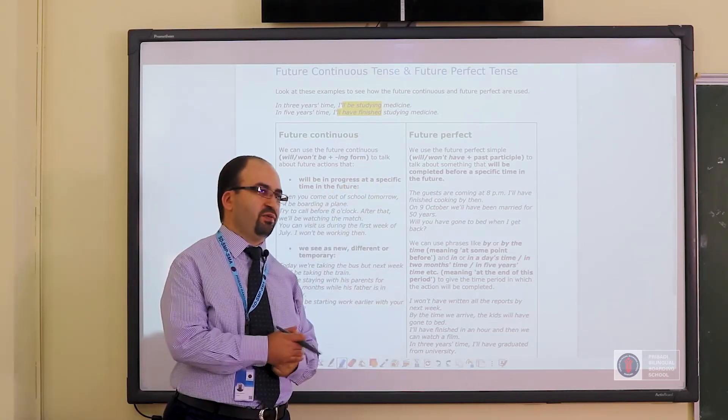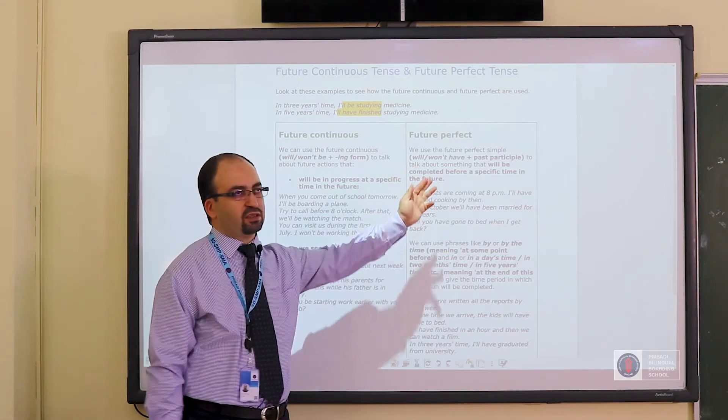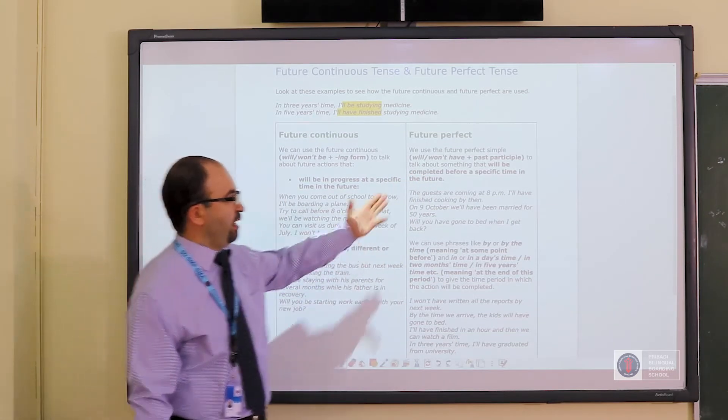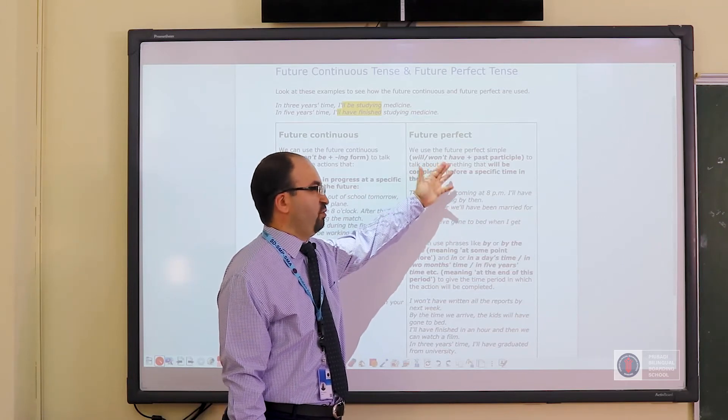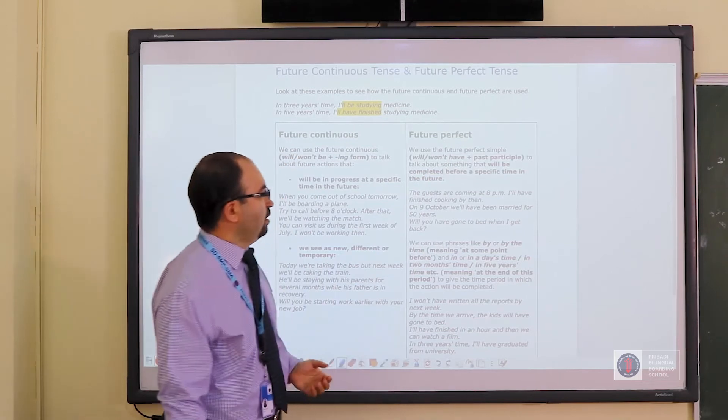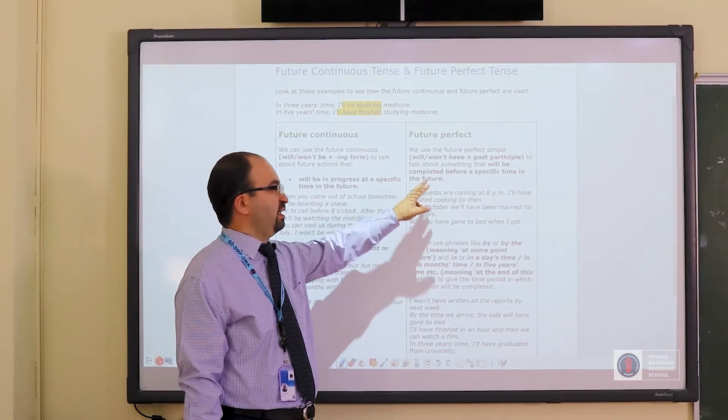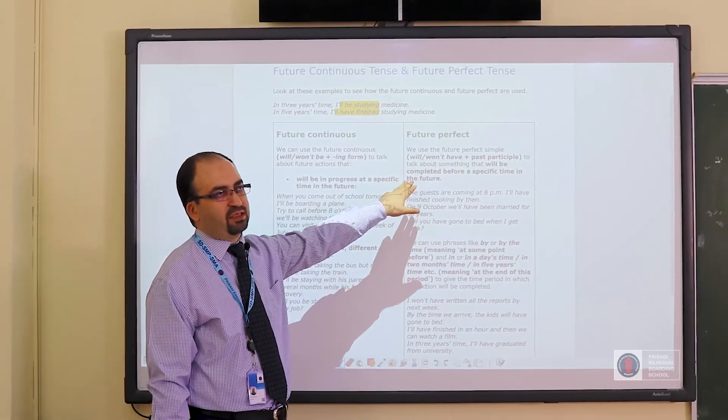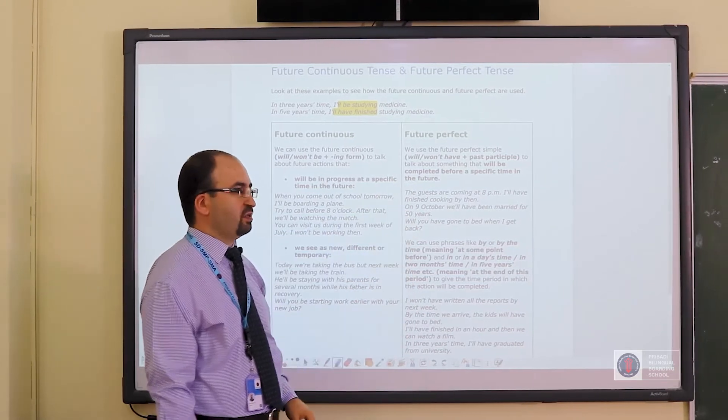And future perfect, again I'll repeat the structure. Will plus have. Sorry, there is no has after will. Always have. Then past participle. When do we use it? When the activities will be completed in the future at a certain time.